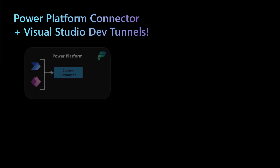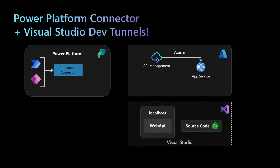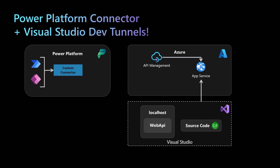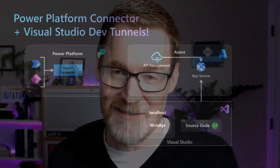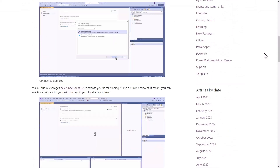Sometimes, of course, you've pushed the Power Platform to its limits and you need to create some custom code and deploy it to Azure. The Power Platform has custom connectors that allow us to do just that. Typically what we would do is create a web API project in Visual Studio, deploy that into our Azure subscription, maybe configure Azure API management, and then extract that schema and create a custom connector from that. This new announcement has just made it even easier, especially when you're just starting to create that custom connector for the first time.